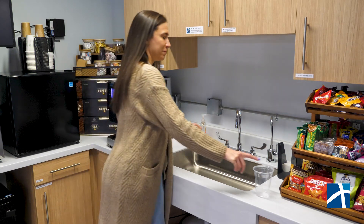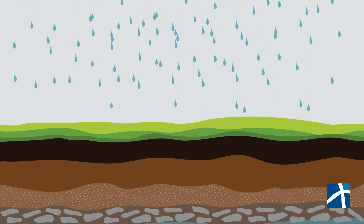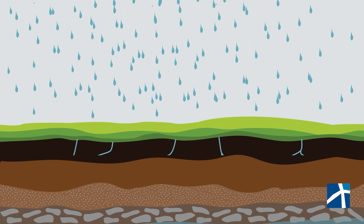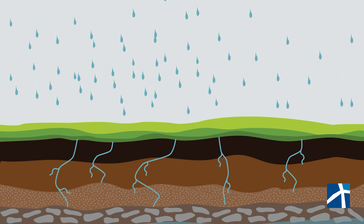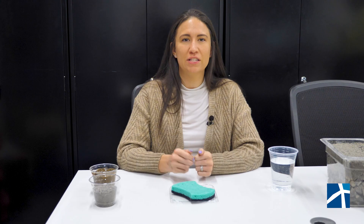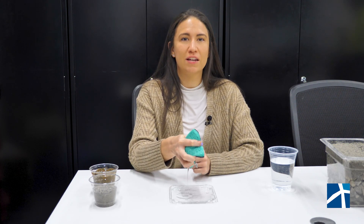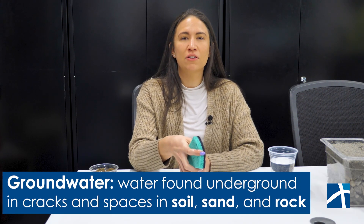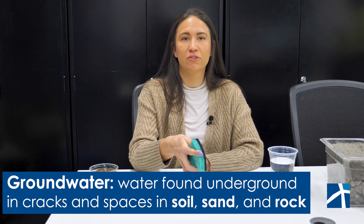So where does groundwater come from? Groundwater comes from rain and melting snow that slowly soaks into the ground over time. In some cases, water from rivers and lakes can also seep down and add to groundwater supplies. But if all this water is underground, why doesn't it just rise to the surface? Well, the ground acts like a sponge, holding water in tiny spaces between soil, sand, and rock. This keeps the groundwater stored underground instead of flowing freely like a river or a lake.